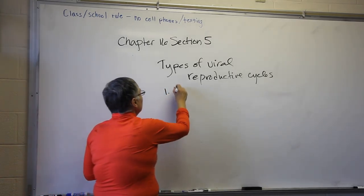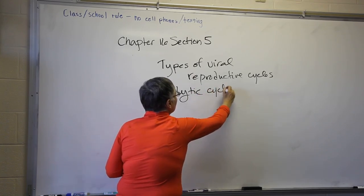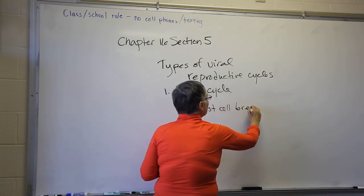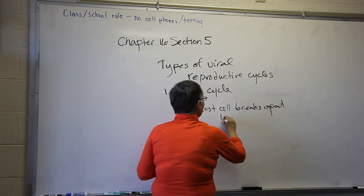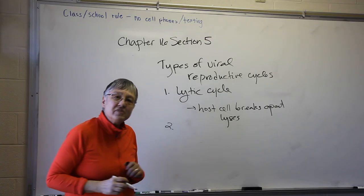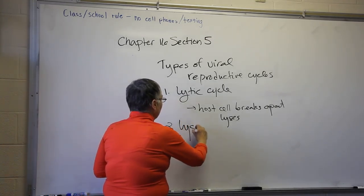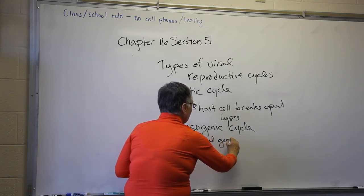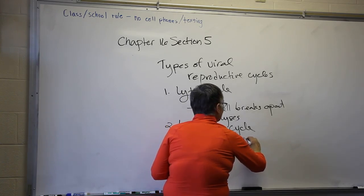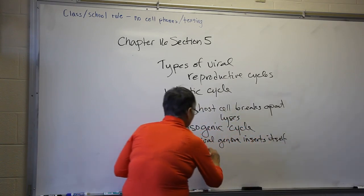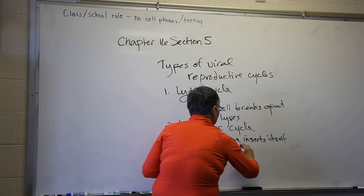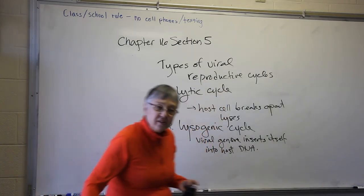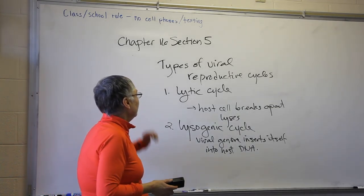The simplest is called a lytic cycle. It's called lytic because the host cell actually breaks apart — i.e., it lyses. The second type of cycle is a little more complex, and it is called a lysogenic cycle. In this cycle, the viral genome inserts itself into the host DNA. We're going to look at the figure in your textbook that diagrams both of these cycles.